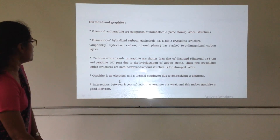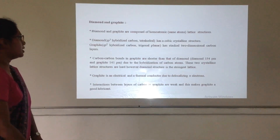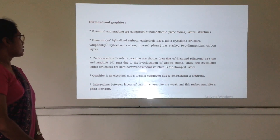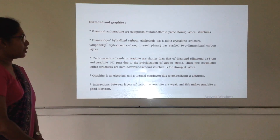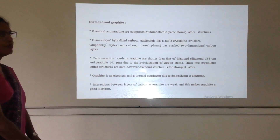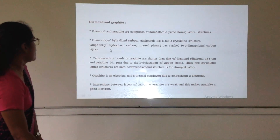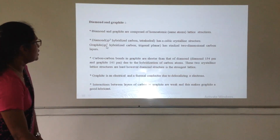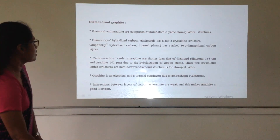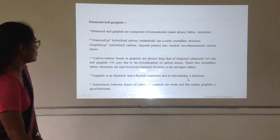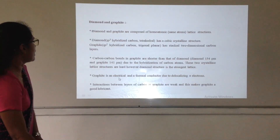Graphite is an electrical and thermal conductor. This is because graphite has sp2 hybridization and consists of delocalized pi electrons. It has an additional p orbital that becomes delocalized, and because of that, graphite can act as an electrical and thermal conductor.